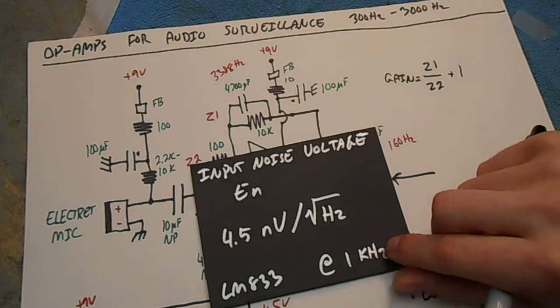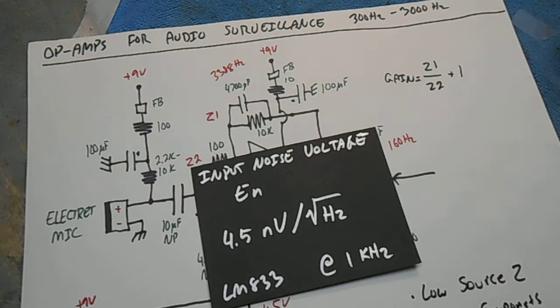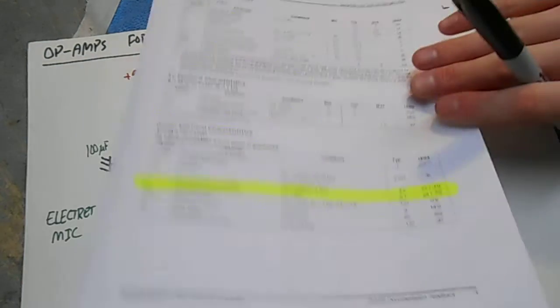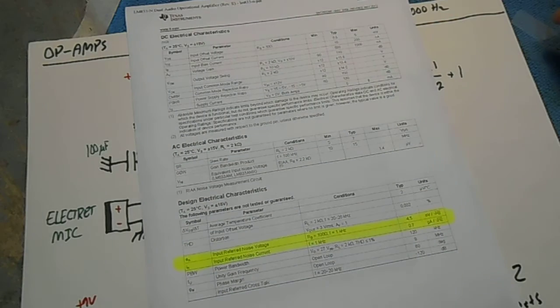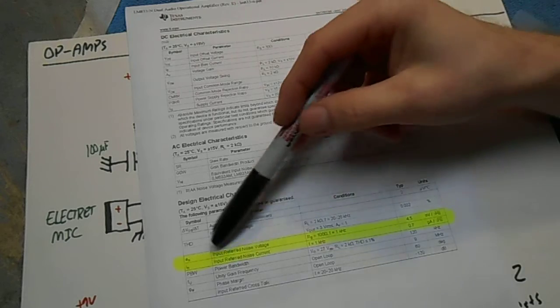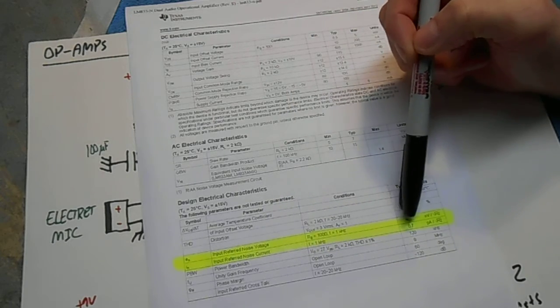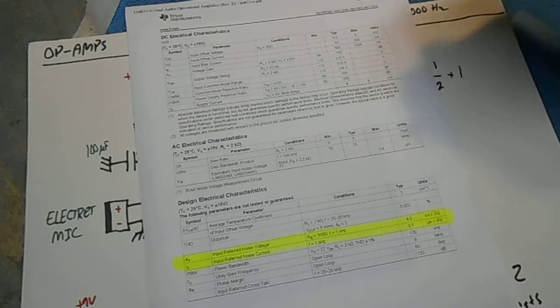The first is called the input noise voltage, labeled E sub N. In the LM833 op-amp we're using in this example, the input noise voltage at 1 kilohertz is 4.5 nanovolts per root hertz.